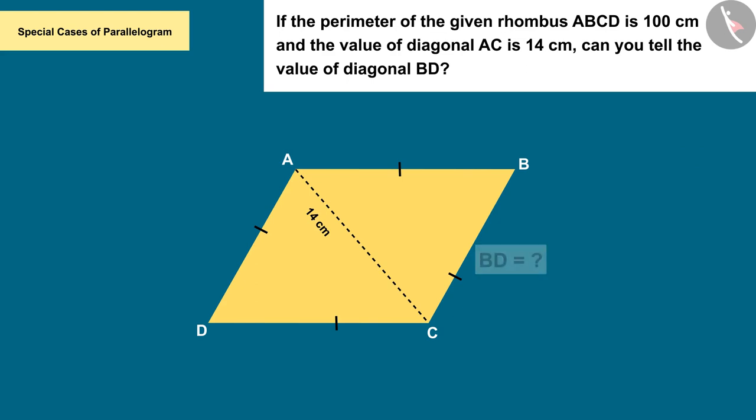Since we have to find the value of diagonal BD, first we draw diagonal BD which intersects the diagonal AC at point O.